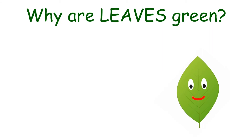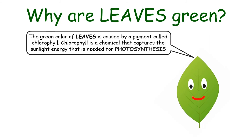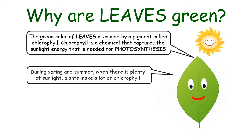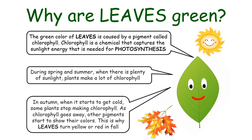Why are leaves green? The green color of leaves is caused by a pigment called chlorophyll. Chlorophyll is the chemical that captures the sunlight energy needed for photosynthesis. During spring and summer, when there is plenty of sunlight, plants make a lot of chlorophyll. In the autumn, when it starts to get cold, some plants stop making chlorophyll. As chlorophyll goes away, other pigments start to show their colors. This is why leaves turn yellow or red in the fall.